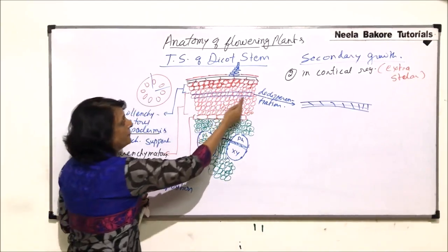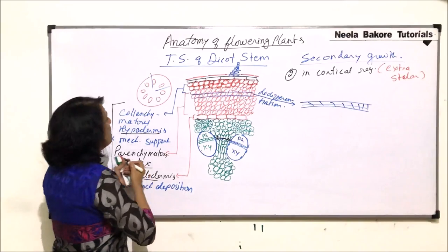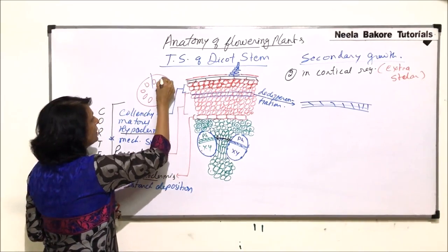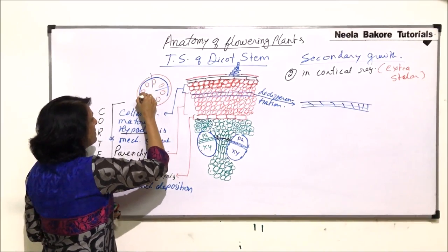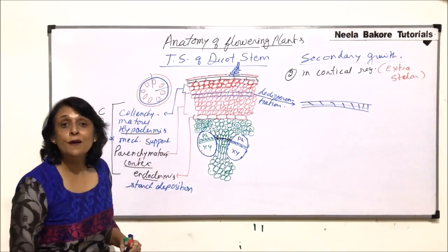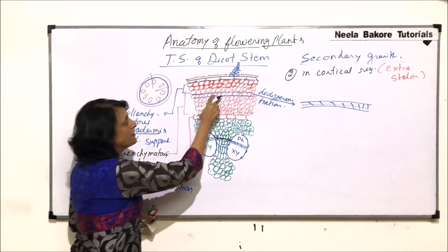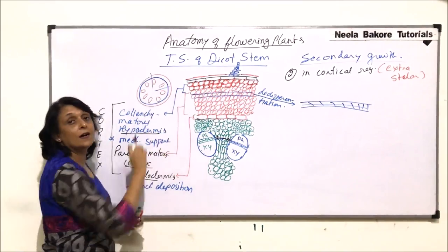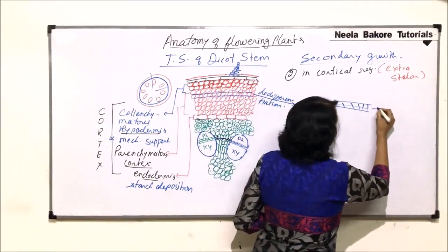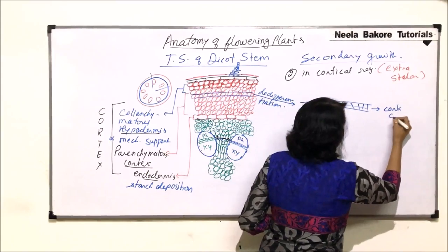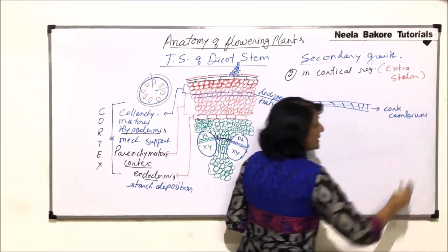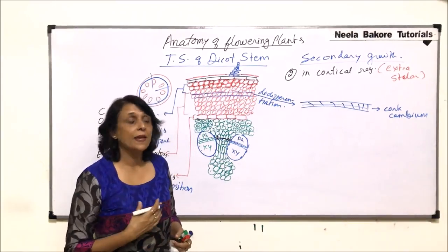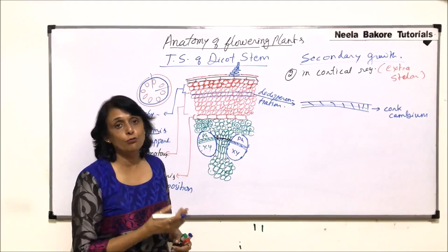Where is that strip formed? This is in the cortical region, and in this cortical region we find a complete ring of meristem which has developed. We have drawn only a section, but this is in the form of a complete ring. This is known as cork cambium, and it is in the form of a ring. Cork cambium is a meristem — it divides to produce new cells.